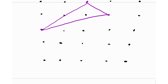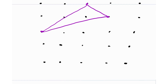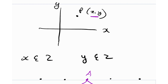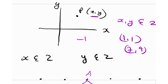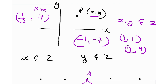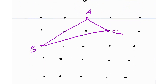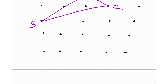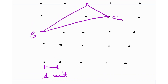This triangle is actually a lattice triangle because all of its three vertices A, B, and C are lattice points — the coordinates of these three vertices are integers. Just to remind you: a point P will be a lattice point if both X and Y are integers. For example, (1,1) is a lattice point, (7,9) is a lattice point, (-1,-7) is also a lattice point. But something like (1/2, 7) is not a lattice point because 1/2 is not an integer.